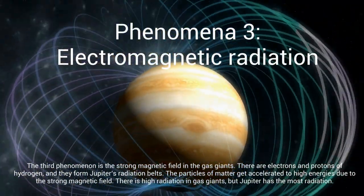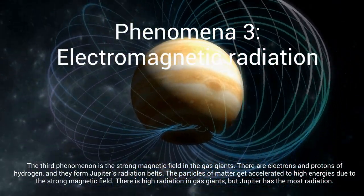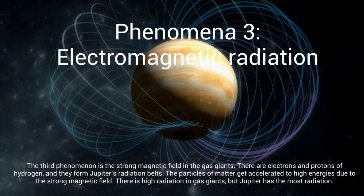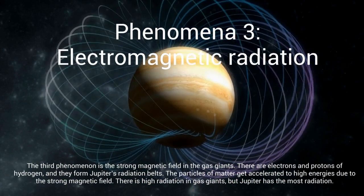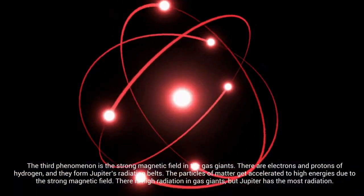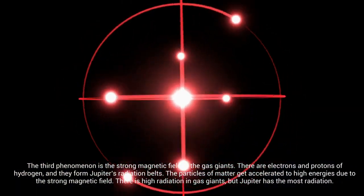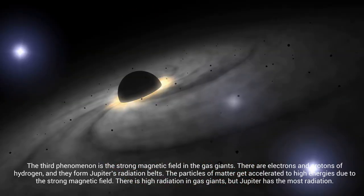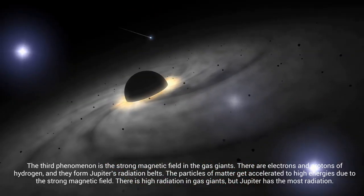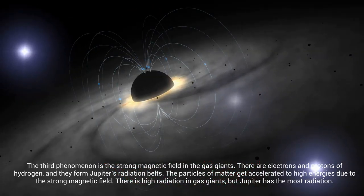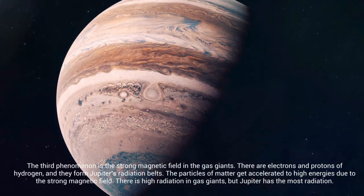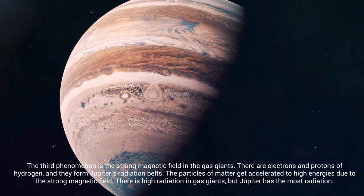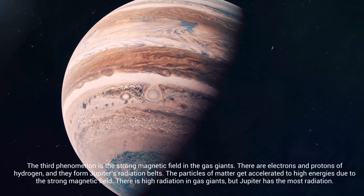The third phenomenon is the strong magnetic field in the gas giants. There are electrons and protons of hydrogen, and they form Jupiter's radiation belts. The particles of matter get accelerated to high energies due to the strong magnetic field. There is high radiation in gas giants, but Jupiter has the most radiation.